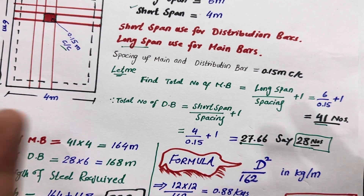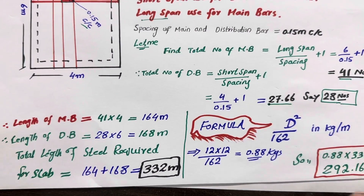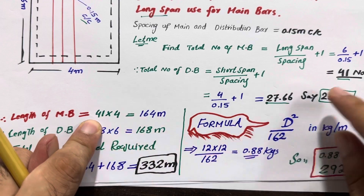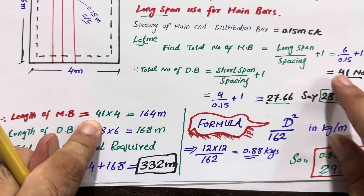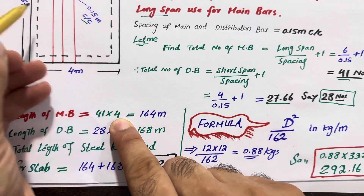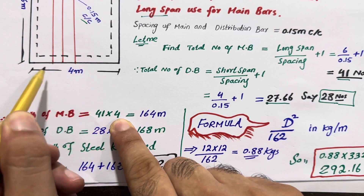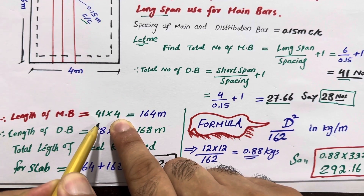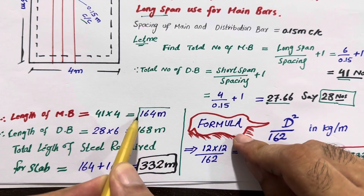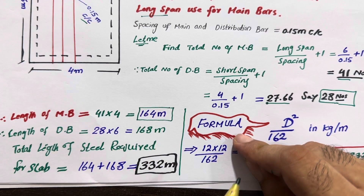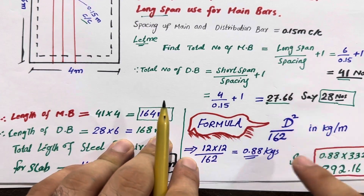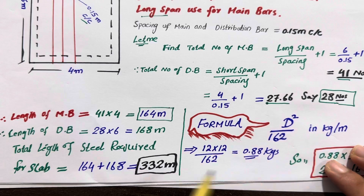Now, what is the length of main bars? We have 41 numbers of main bars, and each main bar length is 4 meter — because the shorter span is used for main bar placement. So 41 numbers multiplied by 4 meter gives a total length of 164 meter required for main bars.